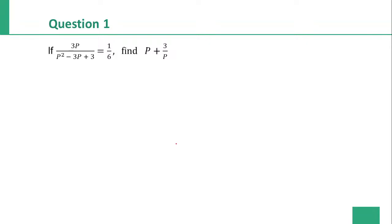First question of the day: if 3p divided by p squared minus 3p plus 3 is equal to 1 by 6, find the value of p plus 3 by p.